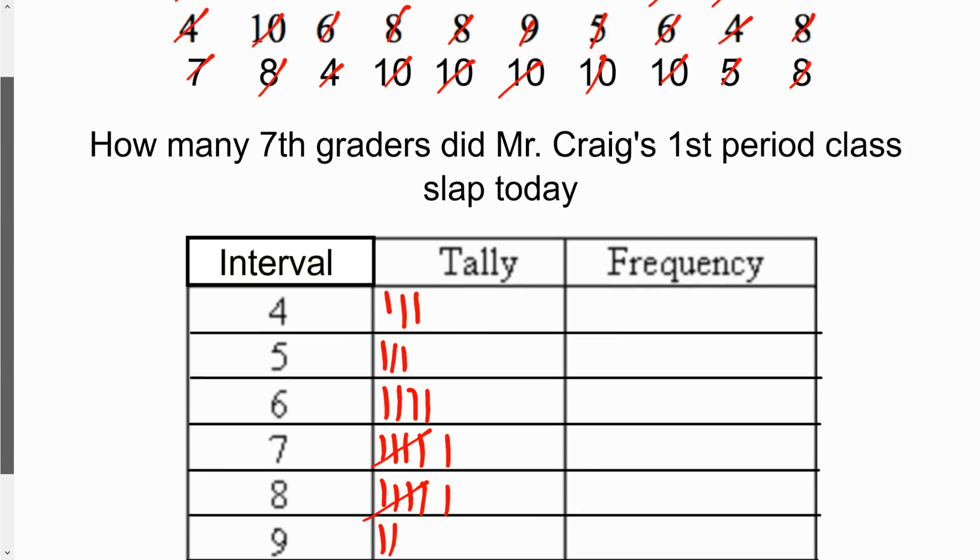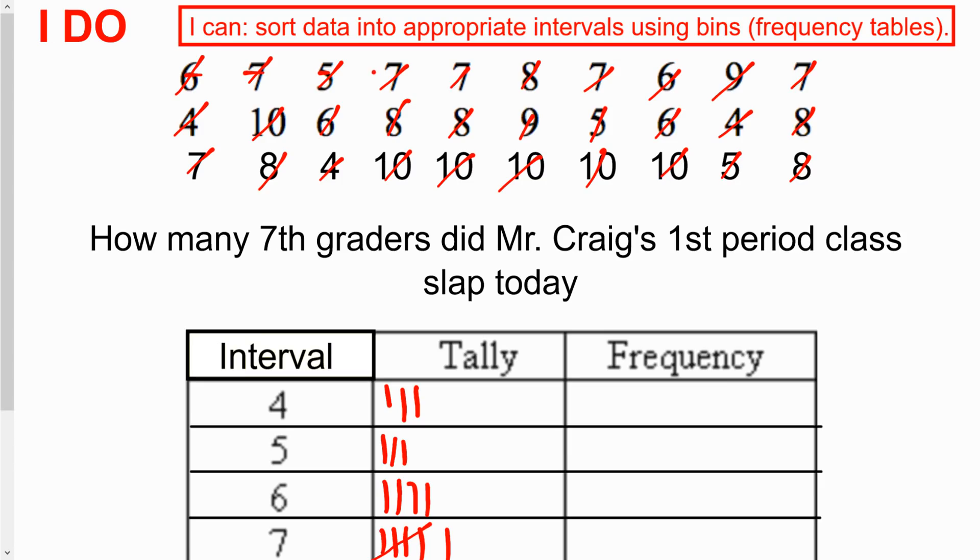We can check how many pieces of data that I have here. We have 30 pieces of data. We also could have done 1, 2, 3 times 10 and got 30 pieces of data here.